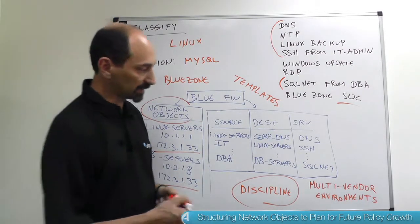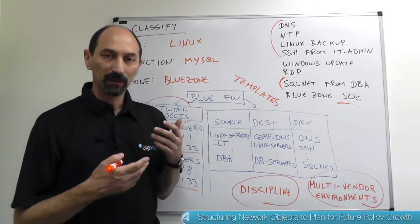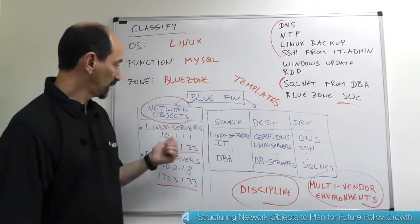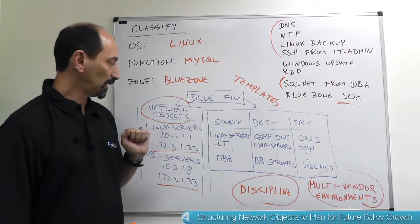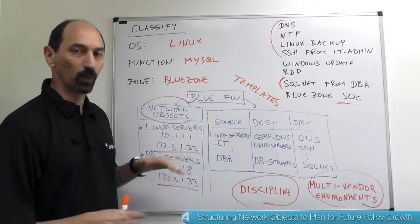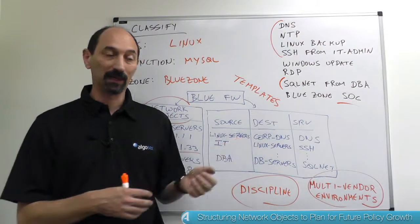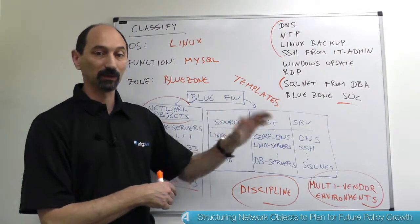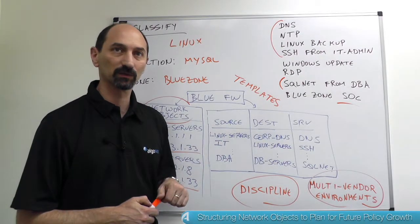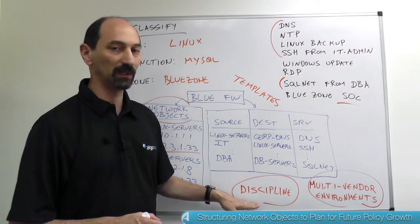A bigger challenge sometimes is what happens when you have a multi-vendor environment. If you have firewalls from different vendors, each vendor supplies their own firewall policy management platform and typically you cannot share network object definitions across vendors. So if you want to use this template approach, you need to define your Linux servers object once on vendor number one and again on vendor number two, preferably using the same name. It's really important to get the content exactly the same on all systems, otherwise you get diverging definitions, the rules will not be consistent, and you've lost the advantage you're trying to achieve. So in a multi-vendor environment, you need even more discipline.